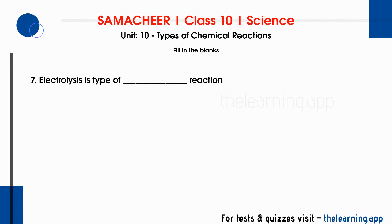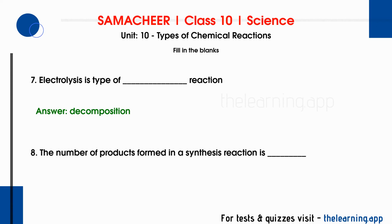Sixth question: The normal pH of human blood is dash. Correct answer is 7.35 to 7.45. Seventh question: Electrolysis is a type of dash reaction. Correct answer is decomposition reaction. In decomposition reactions there are three types: thermolysis, electrolysis, and photolysis. Eighth question: The number of products formed in a synthesis reaction is dash. Correct answer is 1. A synthesis reaction is the same as combination reaction — one or more reactants combine to form one single compound.